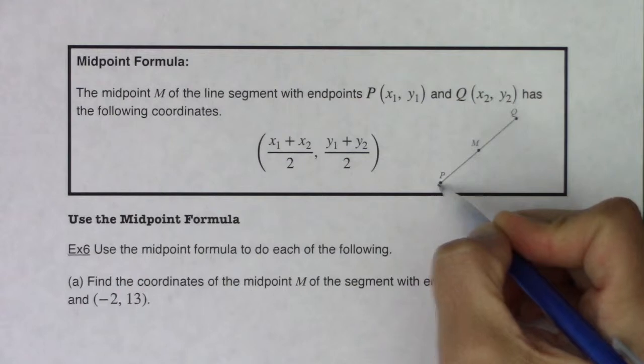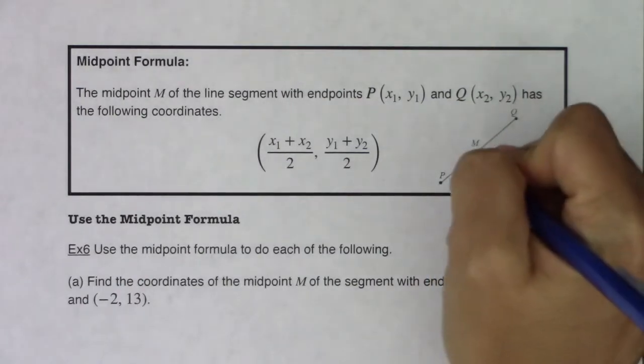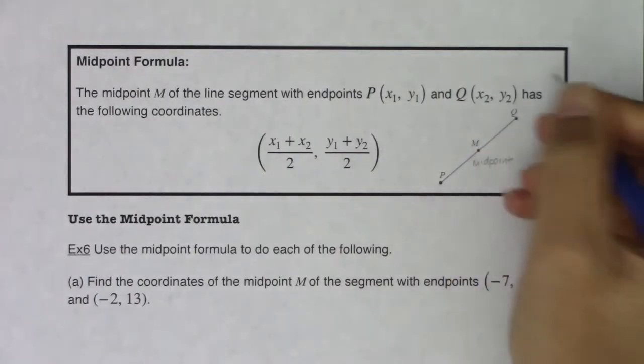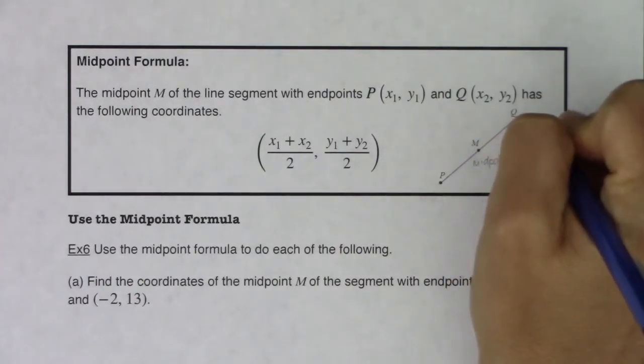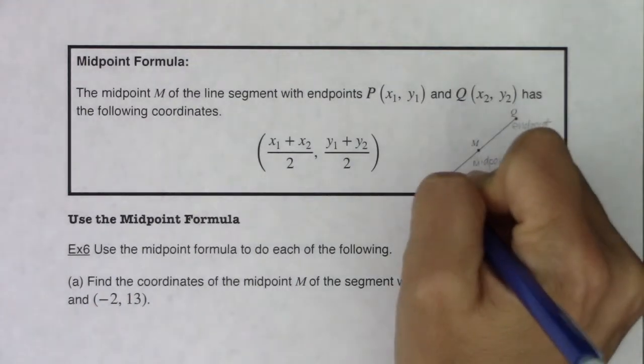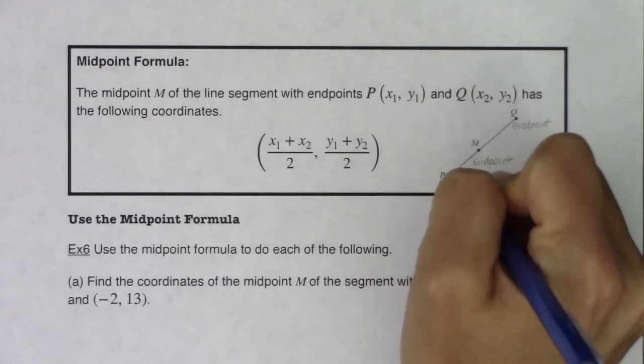So again, endpoint, endpoint, midpoint. So let's make sure we're clear on this. Here's the midpoint, right, halfway between P and Q. So if we've got two endpoints, we can find the midpoint with that formula.